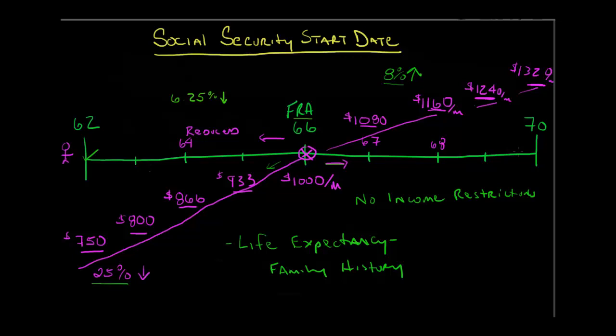That doesn't take into consideration everything, because if you're married, you may even want to push the limits because it helps your spouse's survivor benefit go up. But that's another consideration you'd have to talk about with your financial planner. If everybody in your family dies early or if you're in bad health, then it can be more beneficial to take it early.